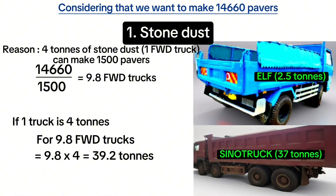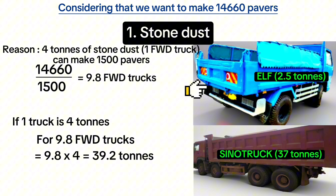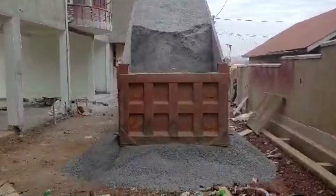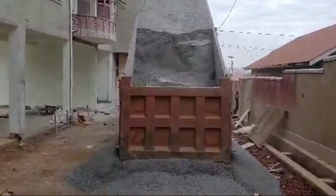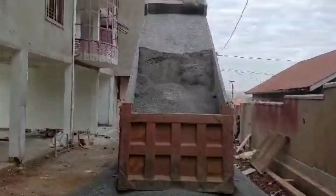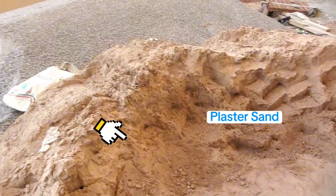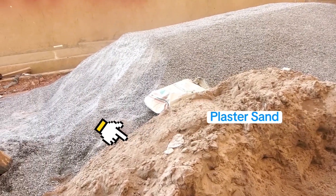One sino truck has a loading capacity of 37 tons. Therefore, instead of buying 9.8 forward trucks, we simply purchase one sino truck with 37 tons and one elf truck with 2.5 tons. 2.5 tons for the elf truck plus 37 tons for the sino truck gives a total of 39.5 tons — that's what we exactly bought here: one sino truck and one elf truck, which is approximate to the 39.2 tons we need.